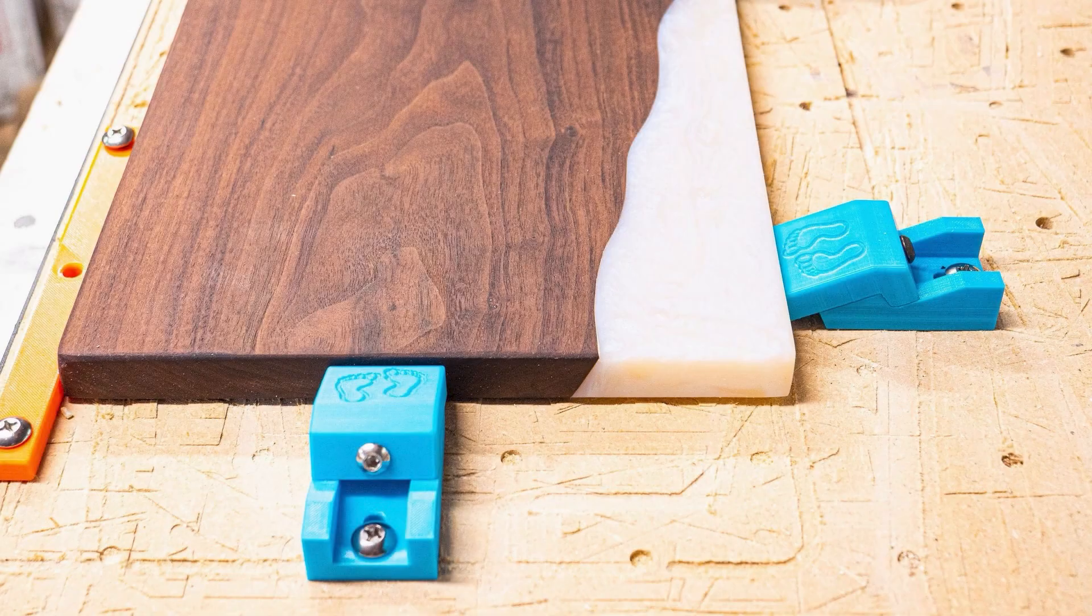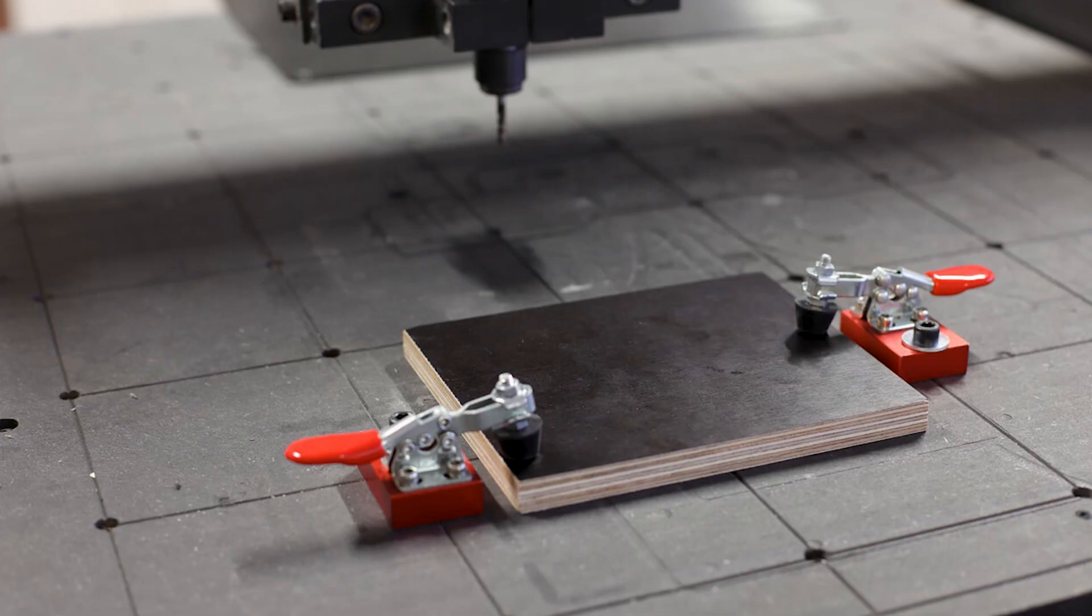That's it for the most common ones. You can note that there are a lot of different other techniques, but there are basically variations of the ones we showed you in this video. Those include toe clamps, C-clamps, or vacuum pads, for example.